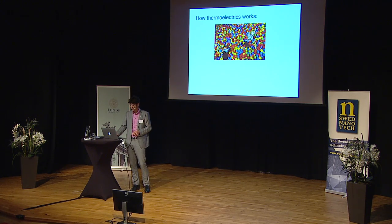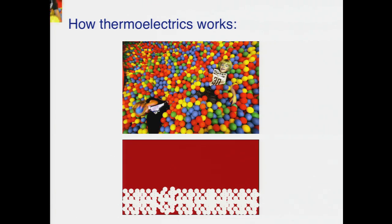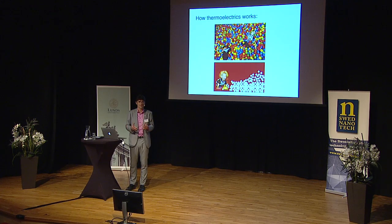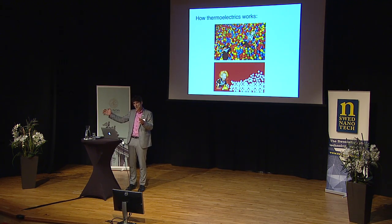One way of thinking about this would be to feed one of those kids some sugar and put that kid on one end of the ball pit. If you wait a little while and just let things happen as they do, then the balls will end up on one side and there are no balls left on the other side. This is basically what random, undirected thermal motion can do for you — that on average particles move in one direction.